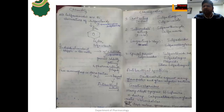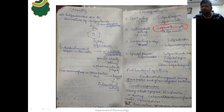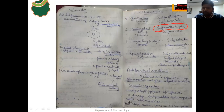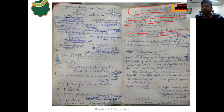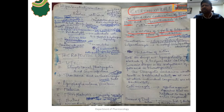Sulfamethoxazole is an intermediate-acting sulfonamide whose duration of action is around 8–12 hours. That's sulfamethoxazole in five parts and trimethoprim in one part — that combination is known as cotrimoxazole. Earlier it was used in many cases of infection: urinary tract infections, respiratory infections, and even bacillary dysentery, so it was widely used.